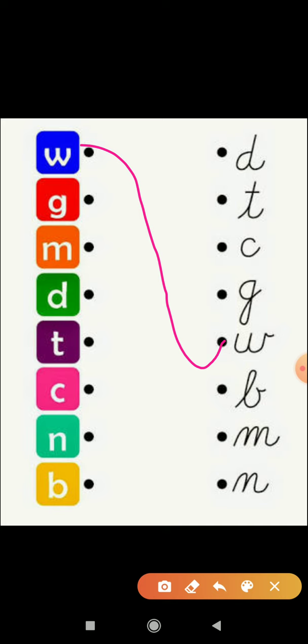Okay, and D, how to write D in cursive? Just like this. And T is here. And C, small C and cursive C. N, this is the normal alphabet and this is the cursive alphabet. And B, B is here.